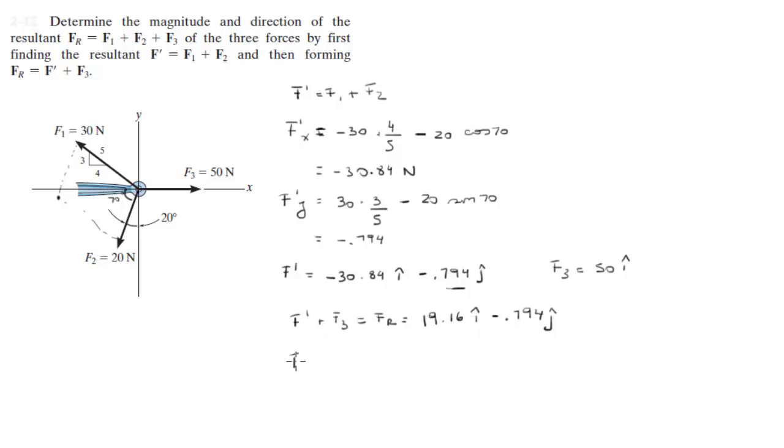So you need to convert this to polar. FR in polar is equal to the square root of x squared plus y squared, which will give you 19.17. And the angle you get by doing the tangent inverse of the Y over the X, which will give you 2.37 degrees, but it's negative.